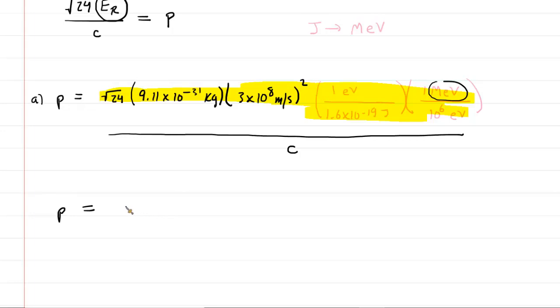And when you do that, you should end up with about 2.51. And now this is in mega electron volts divided by the speed of light. And this indeed would be the correct answer to part A.